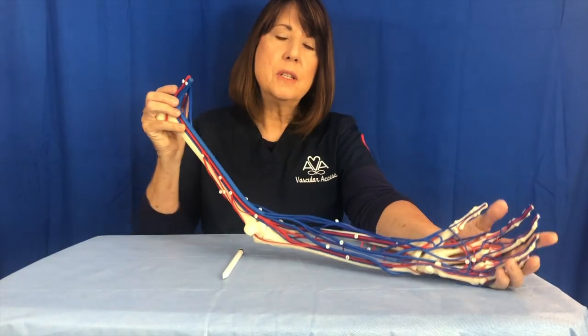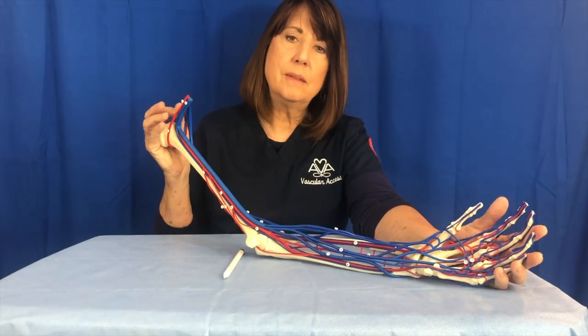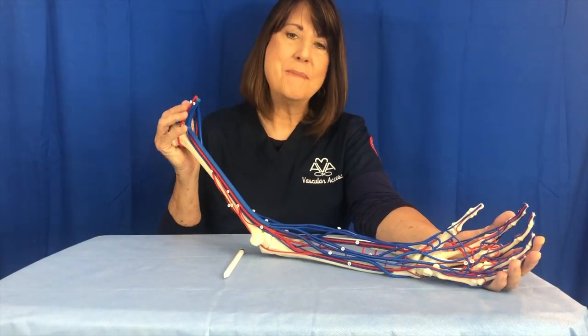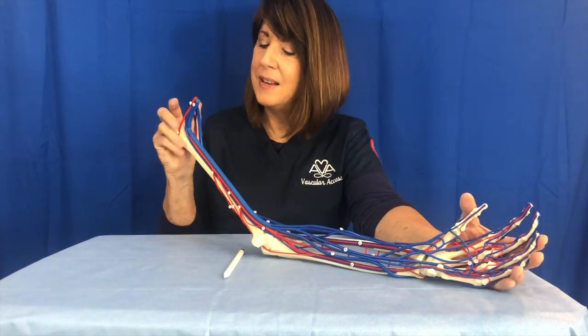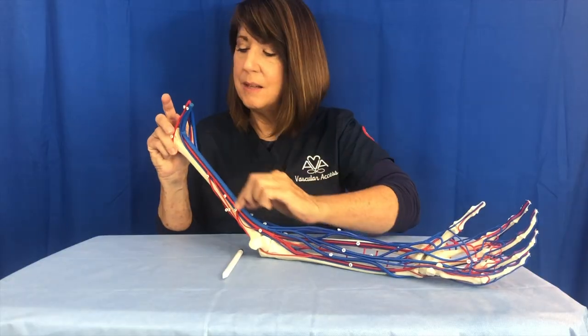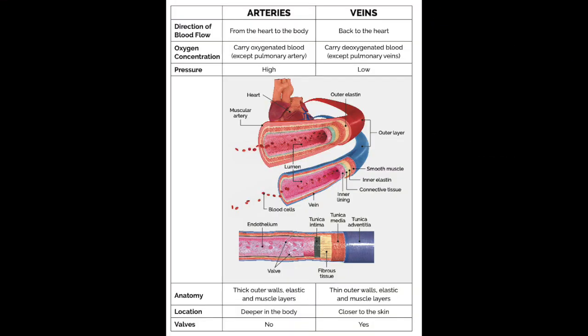So, arteries in this model, like many models, are red. The venous system is in blue. Let's start with a little vessel layer review, and then we'll get right into those vessels of the upper arm for vascular access.